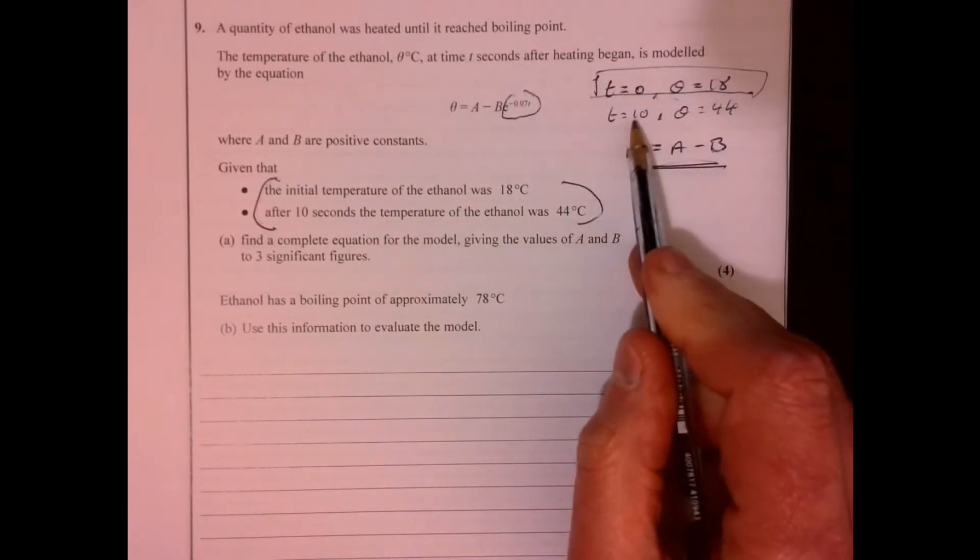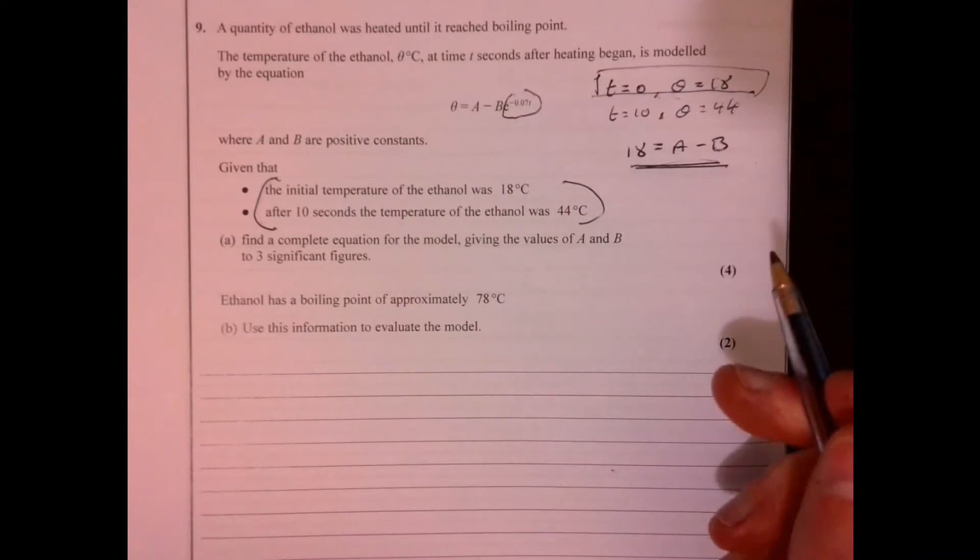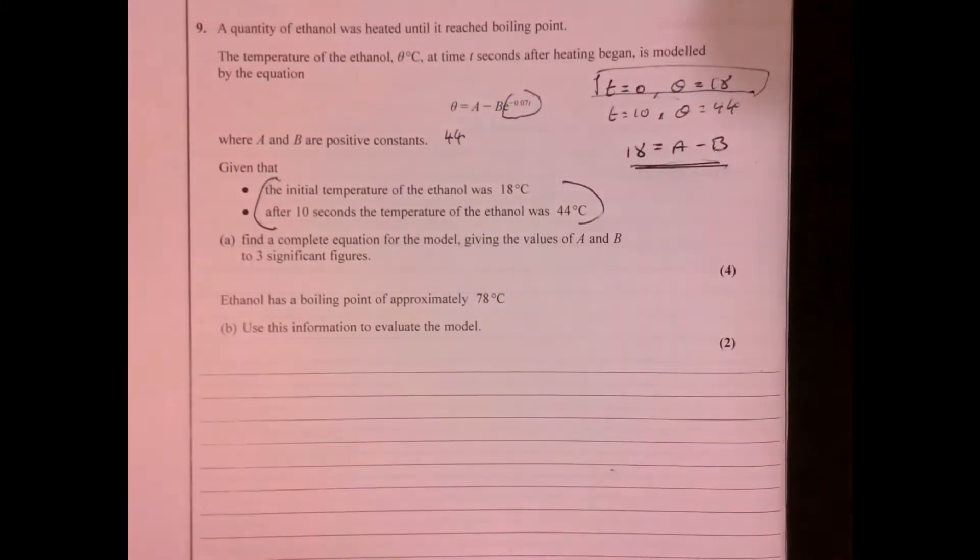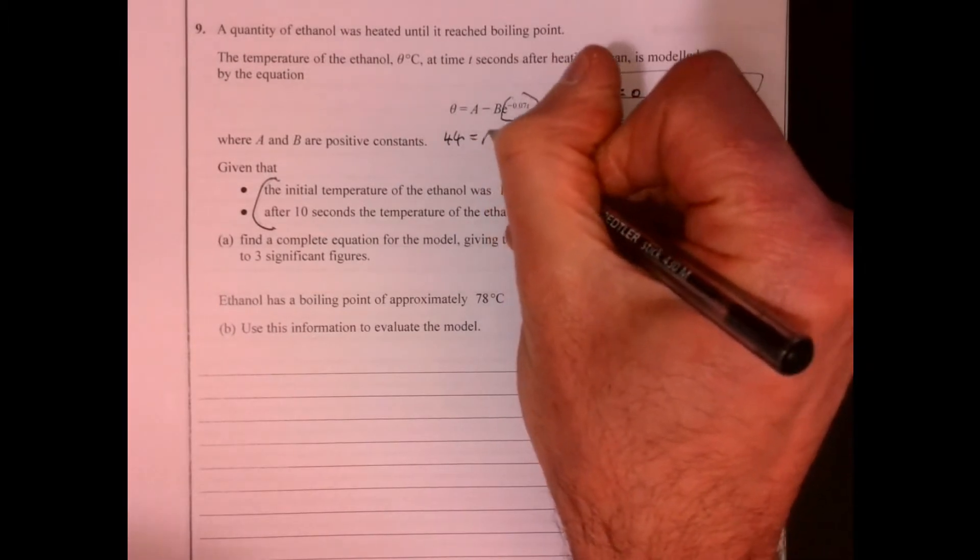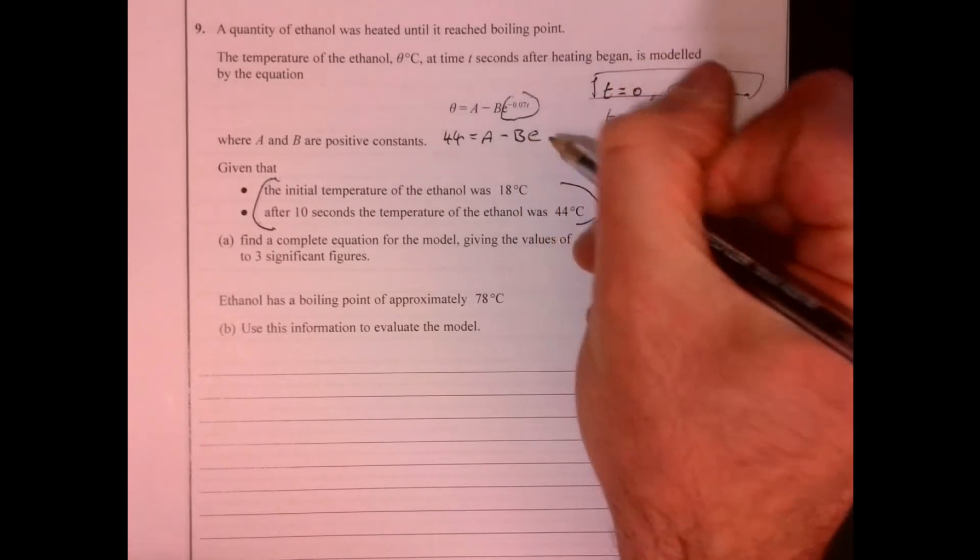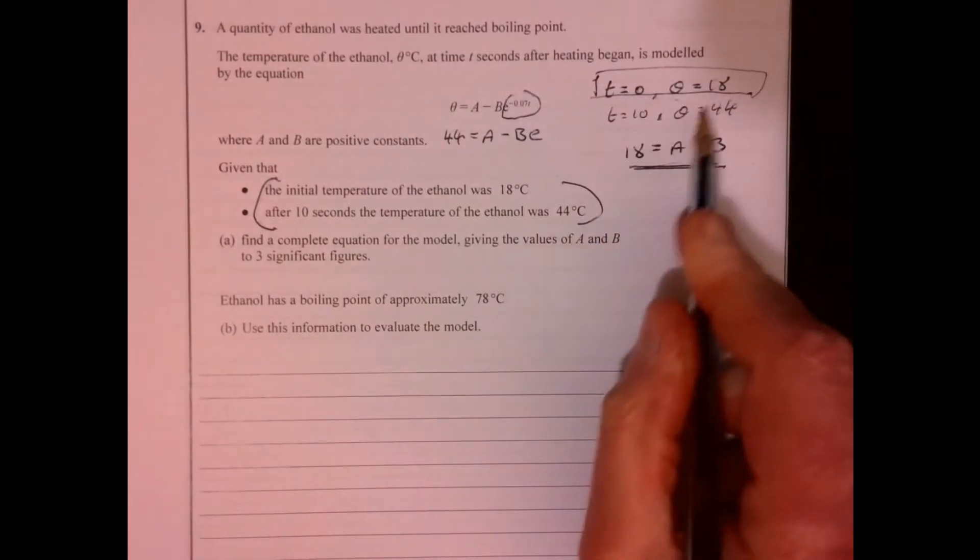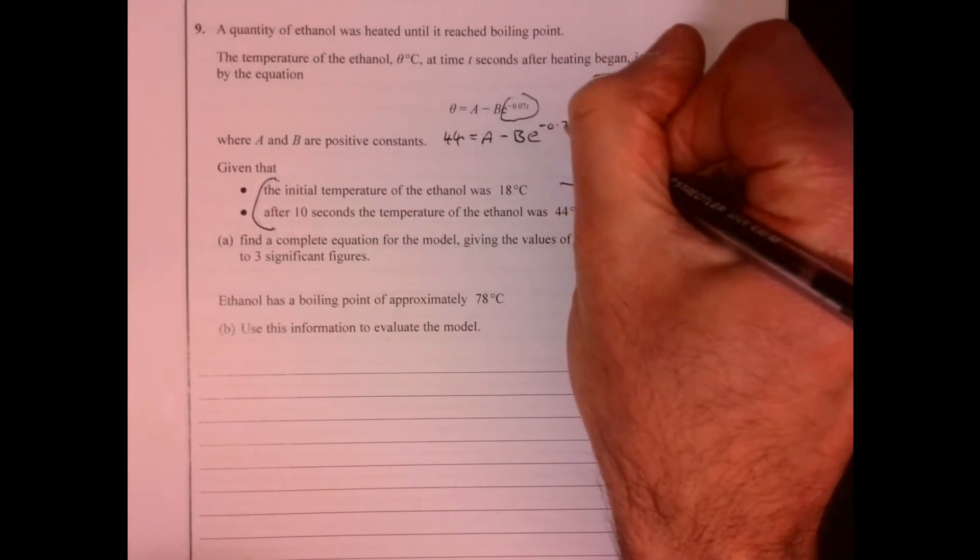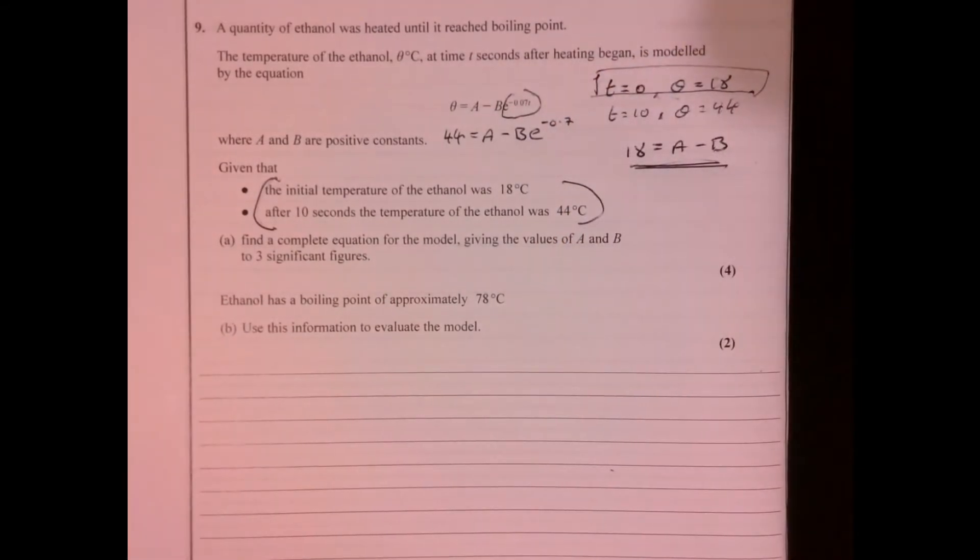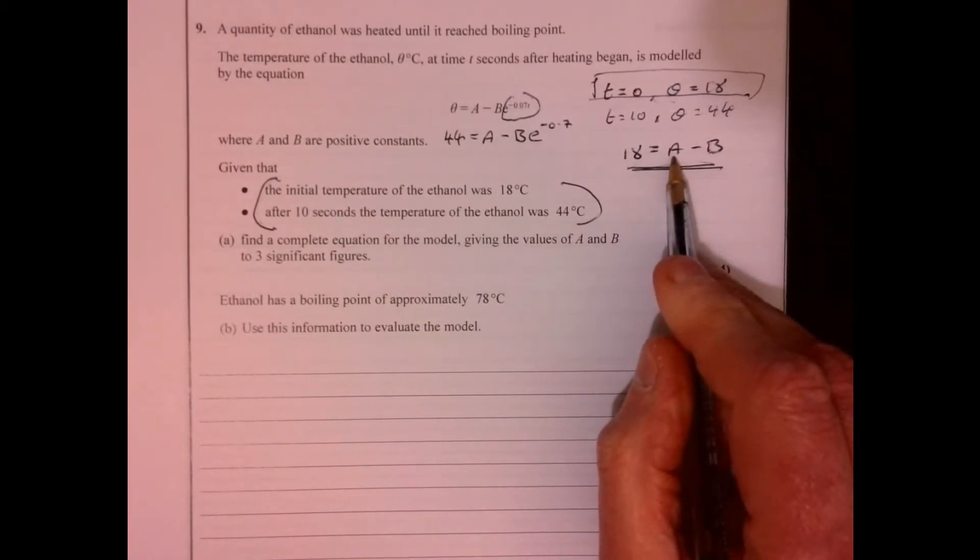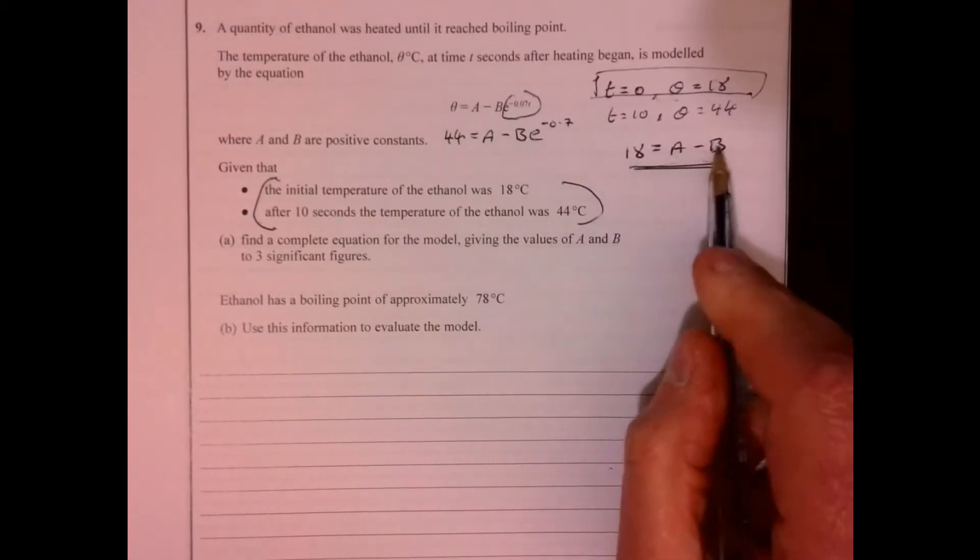Now let's substitute the second one in and see what we get from there. So if I substitute that in, we get 44 equals A, take away B to the E, and T is 10. So that's going to be minus 0.7. At this stage, what do we know? Well, A is equal to 18 plus B.